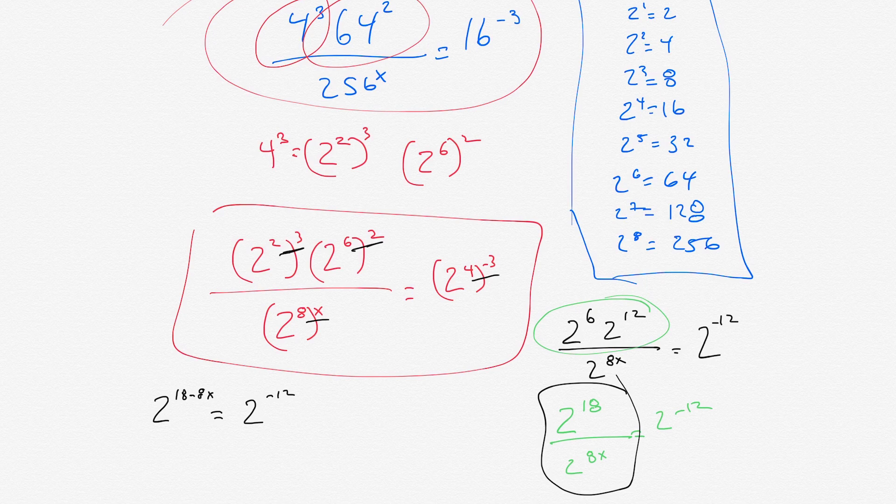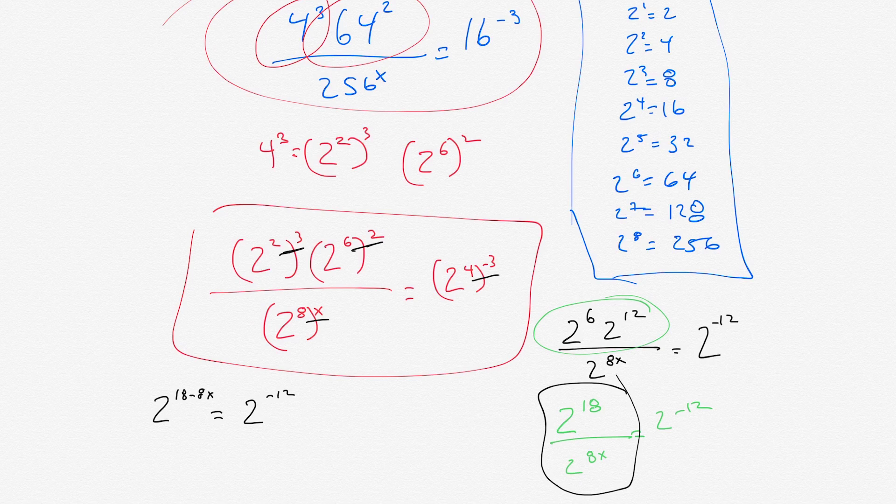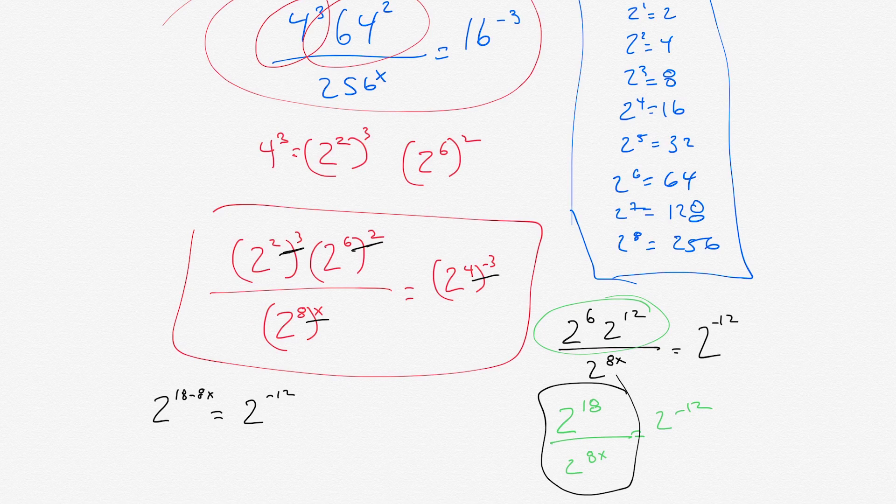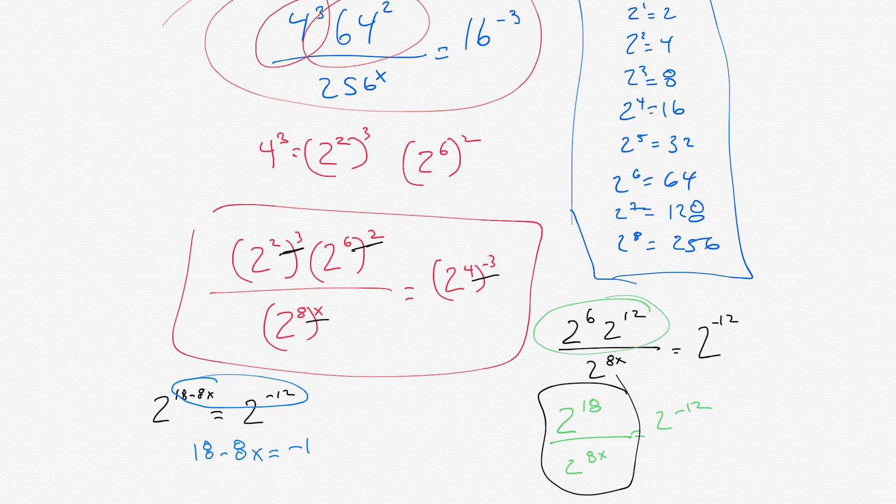Now, at this point, we got the bases are the same. So, we could set the exponents equal to each other. We got 2 to the 18 minus 8x equals 2 to the negative 12. So, we could literally just set the exponents equal to each other. We got 18 minus 8x equals negative 12.